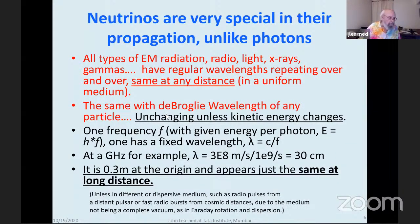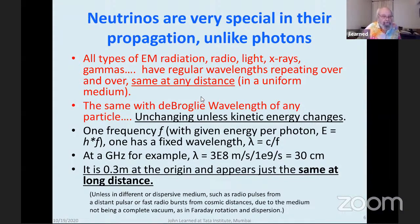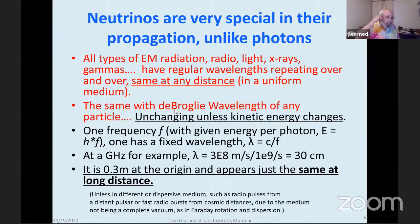For most of this talk, I want to emphasize a simple property. All types of electromagnetic radiation — radio, light, x-rays, gammas — have regular wavelengths, the same thing over and over. Nothing happens as it crosses the universe unless it loses energy. The same is true of the de Broglie wavelength of any particle — it's unchanging unless the energy changes. At a gigahertz, it's 30 centimeters, and it's 30 centimeters no matter how far away you go.